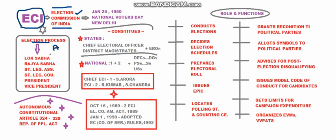The elections ECI oversees include those for Lok Sabha, members of Rajya Sabha, state legislative assemblies, and state legislative councils. It also holds elections for the offices of President and Vice President of India.